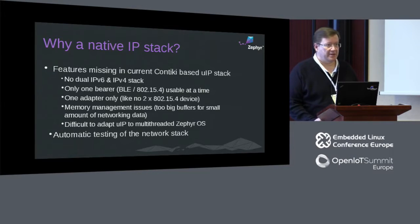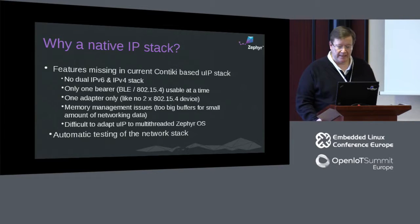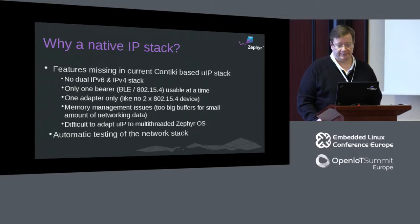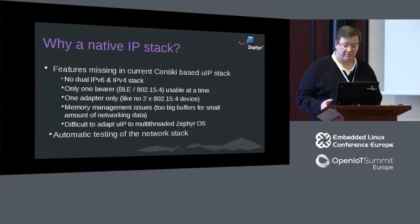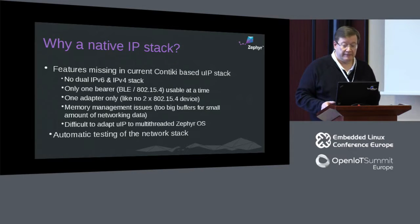As these IoT devices just need to work, testing the functionality is really important. We need a way to verify that each new commit in the networking code does not cause any regressions. For these purposes, we are creating unit, component, and functionality testing, and these tests need to run after each commit to the source tree. With the legacy stack, this is a bit difficult as the code base already exists, and it is slightly easier to create these tests for a new stack.